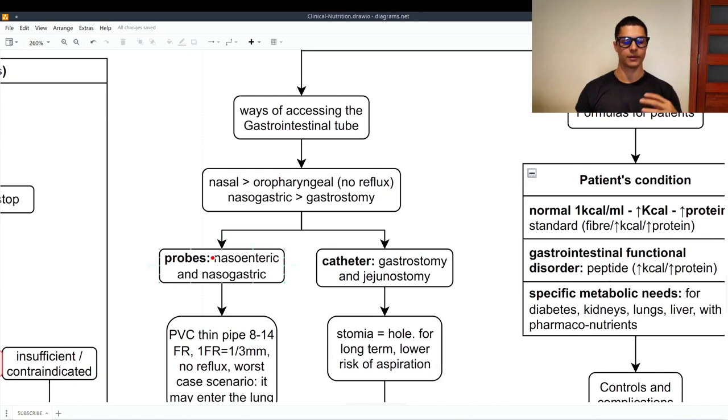So we have two types here. We have the probes and the catheters. So the probes are for the nasoenteric and nasogastric. So nasoenteric, naso-nose, enteric-intestine. So a probe through the nose up to the intestine. Nasogastric, same but gastric means stomach. So from the nose to the stomach. Catheter, gastrostomy and jejunostomy. So the stomie comes from stomia which means hole. So basically this is a hole in the abdomen that reaches the stomach. And this one, jejunostomy, is a hole in the abdomen that reaches the jejunum which is a part of the intestine.